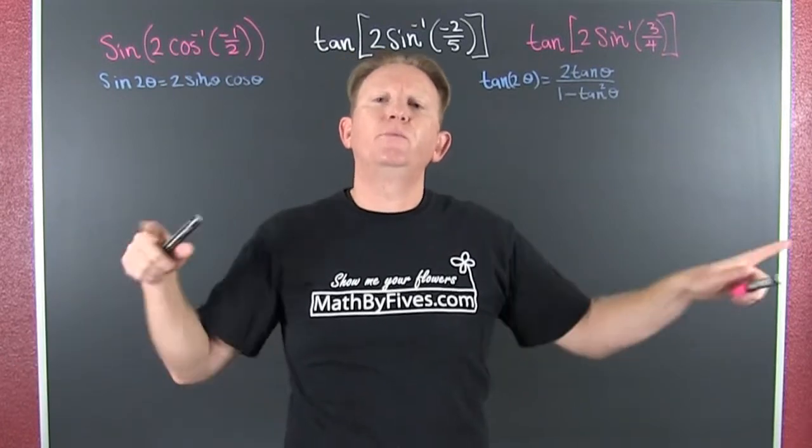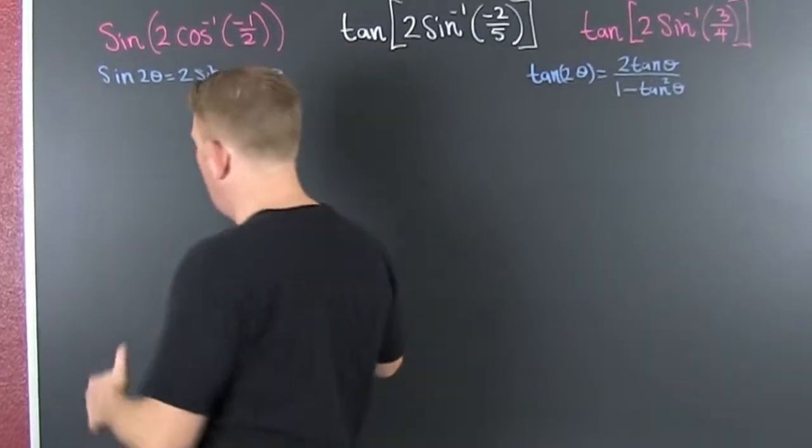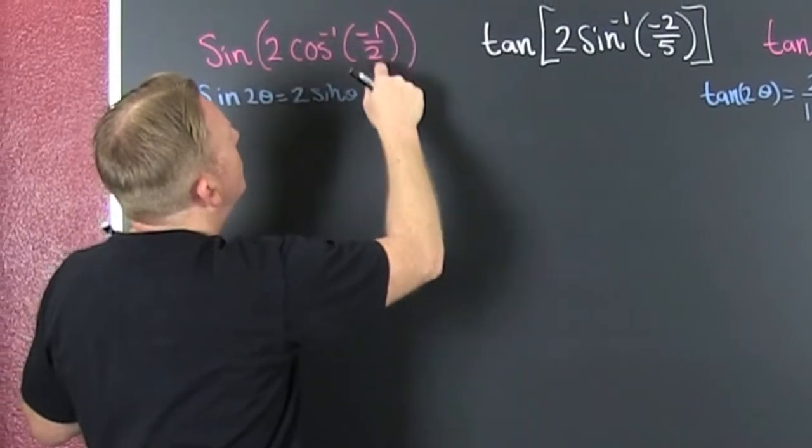Well, alright, alright! What are we doing? We're doing double angles. Exactly, let's go with inverses. Oh boy, I'm looking at the sine of 2 times the cosine inverse of minus 1 half.